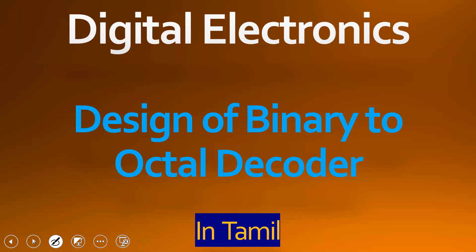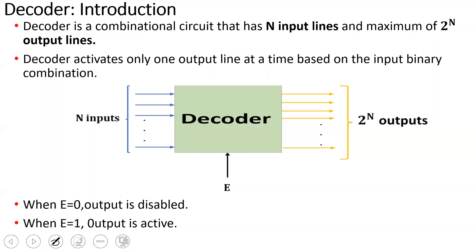Binary to octal decoder is a 3-to-8 decoder. If you explain binary to octal, it will have 8 output lines — 8 is represented by octal. We will design a binary to octal decoder. For a decoder, there are n inputs and 2 to the power n output lines.